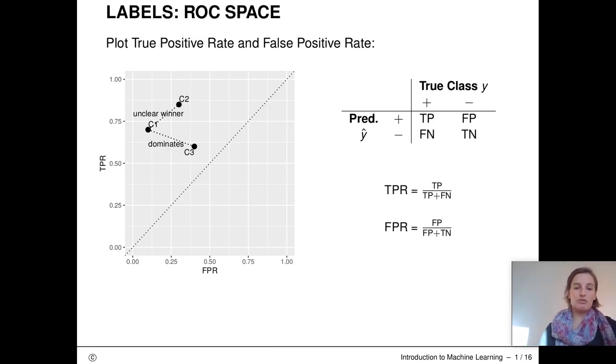Both measures range between 0 and 1 or 0 and 100 if given in percentage points. If we plot these two measures, like in this example here, we can compare several models with each other.